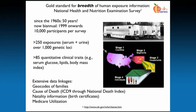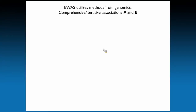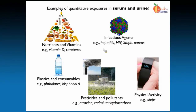NHANES also includes extensive data linkages important for searching health outcomes: cause-of-death information linked through the National Death Index, geographic data — since geography plays a large role in environmental exposure — mortality information, and healthcare utilization data. Examples of quantitative exposures assessed in serum and urine include markers for nutrients and vitamins such as vitamin D and carotenoids, infectious agents like hepatitis and HIV, plastics like phthalates and bisphenol A, pesticides and pollutants such as cadmium and hydrocarbons, and even quantitative metrics of physical activity like step counts.